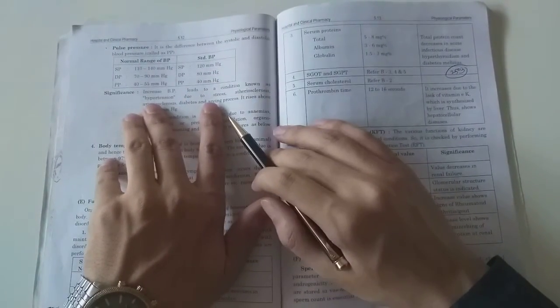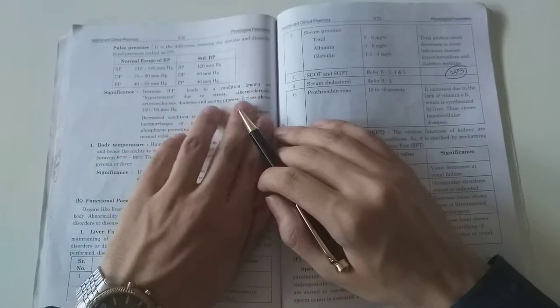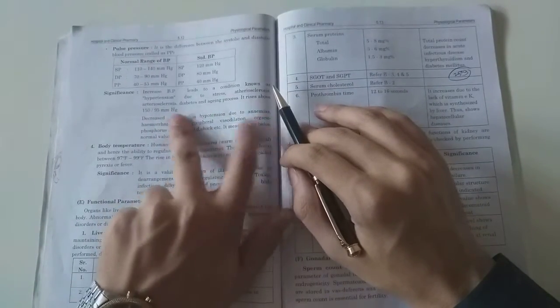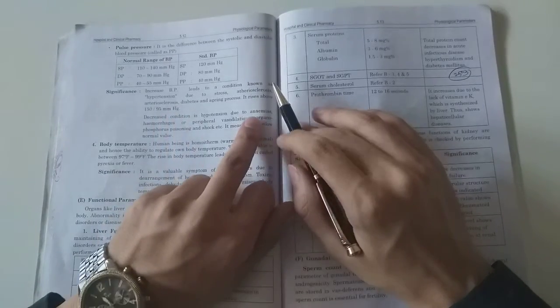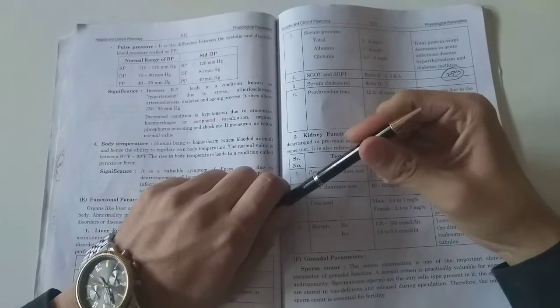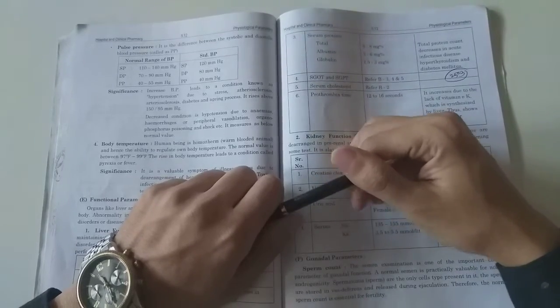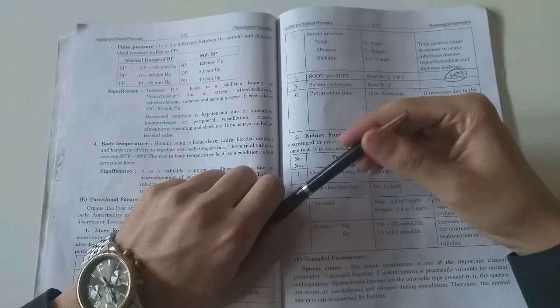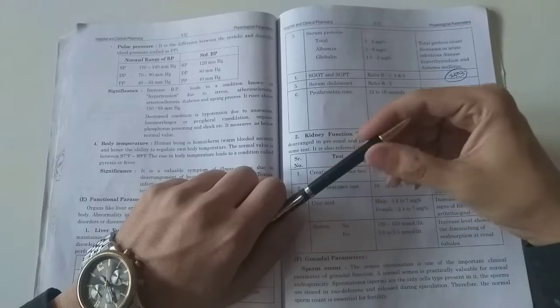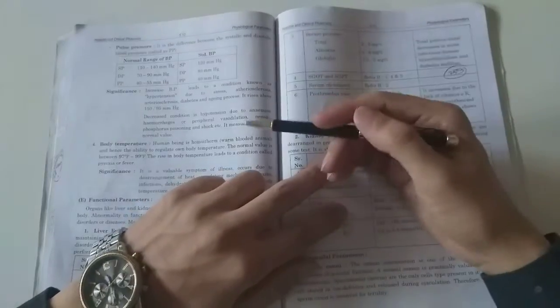Increased blood pressure leads to a condition known as hypertension due to stress, atherosclerosis, arteriosclerosis, diabetes, and aging process. It arises above 150/95 mmHg. If blood pressure is increased, the situation is called hypertension. We take medicines like propranolol, ACE inhibitors, diuretics, beta blockers, and alpha-beta blockers for hypertension treatment.